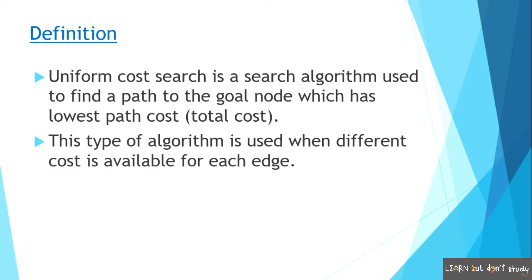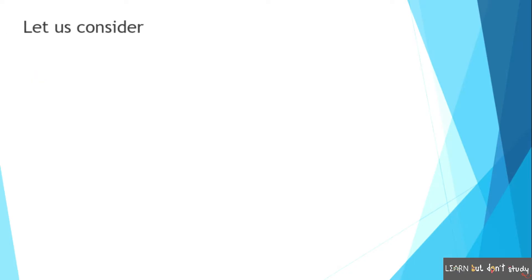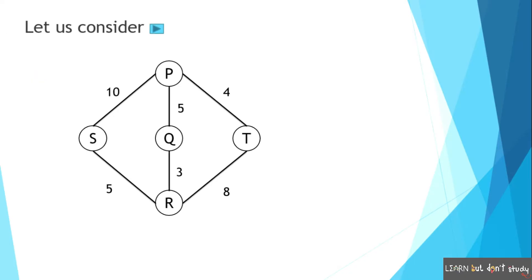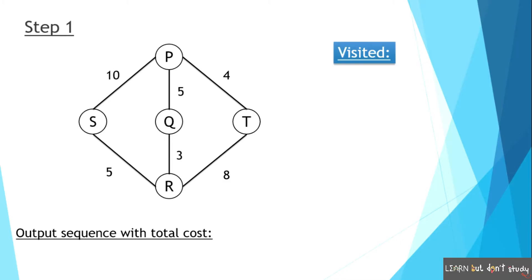Now, let's look at the Uniform Cost Search. Let's look at two examples. Let's look at the first example — we have a graph. Let's take the start node, which is P. If we reach the same path to find the shortest distance, we will try to find that path. Now let's look at the path — Step 1. P is the root node.